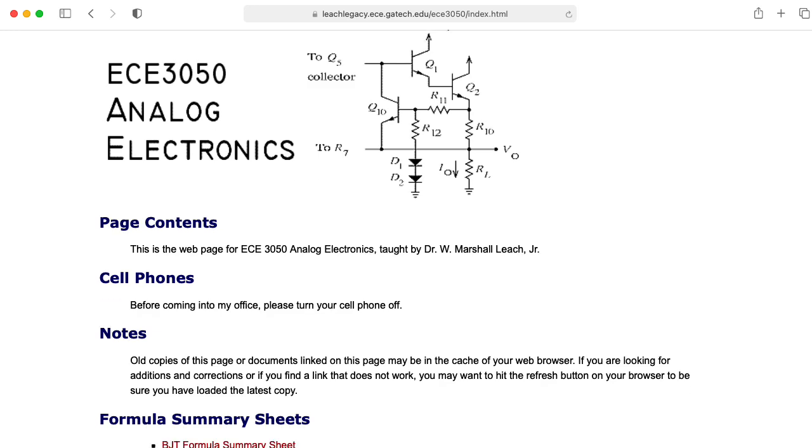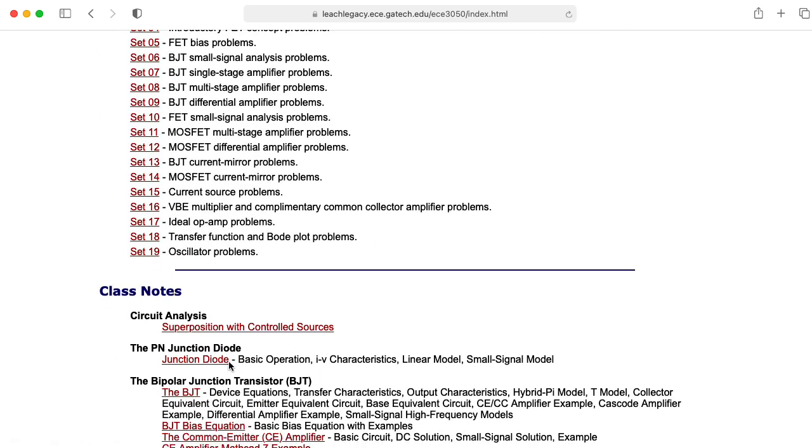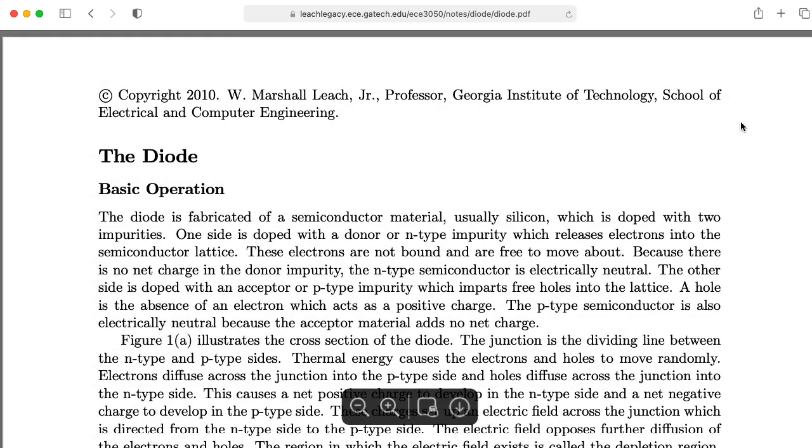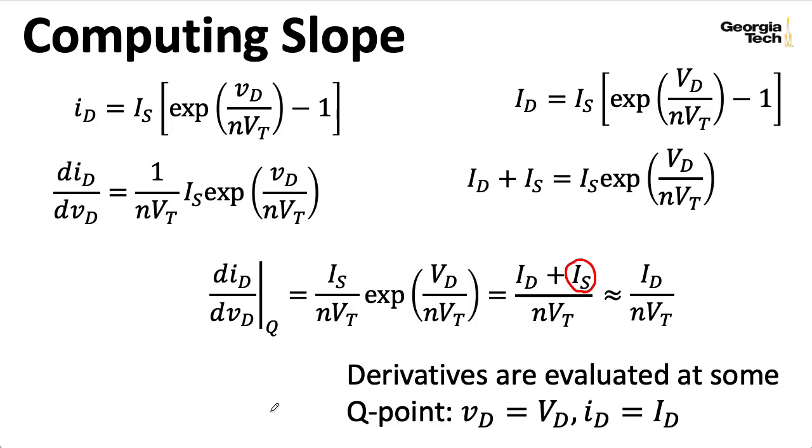If you look at Marshall Leach's course notes on his ECE 3050 website, remember, ECE 3050 is just an earlier name for what's now called ECE 3400. He uses a notation for this evaluation of a derivative at a quiescent point, where he puts capital letters in here for everything. I haven't really seen that anywhere else. That seems to be a Marshall specific notation. If you've seen another source that uses this notation, please let me know in the comments below.